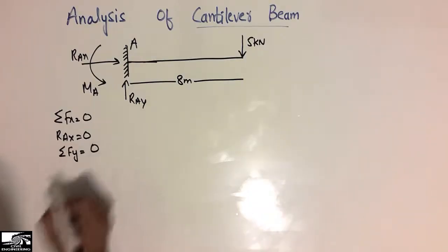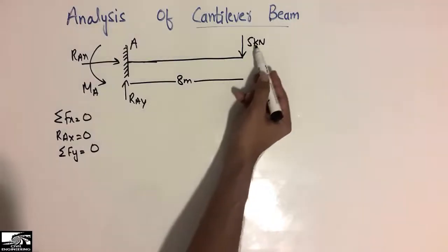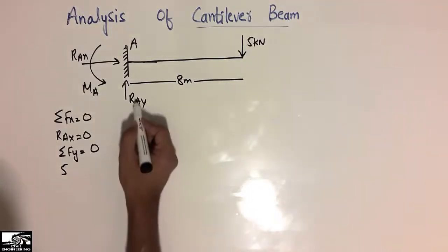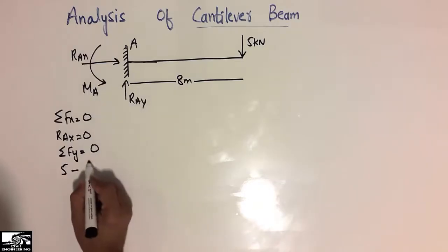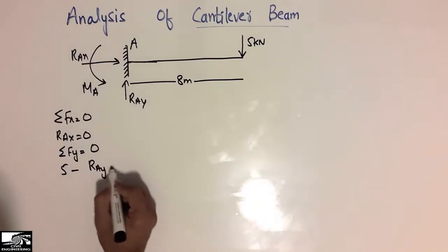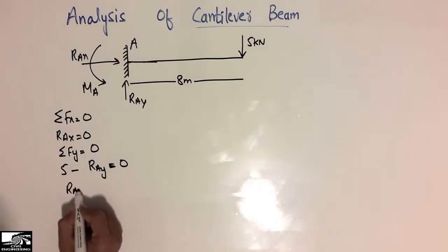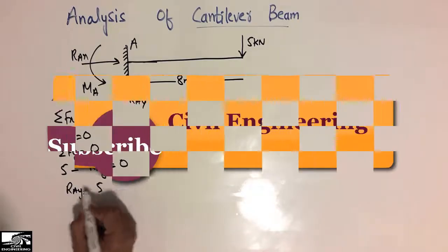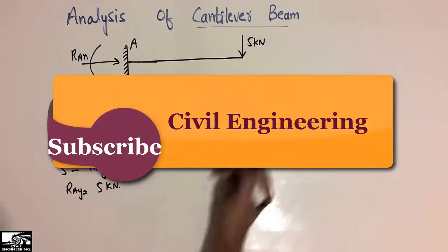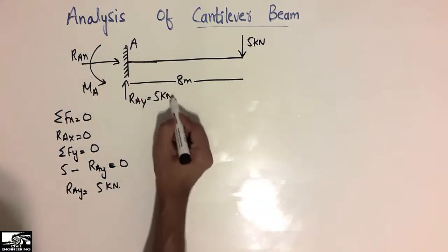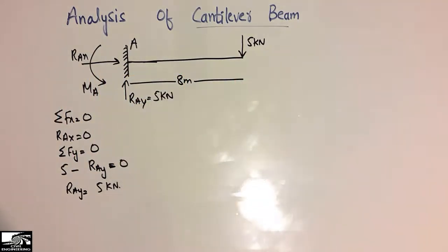Now for the vertical direction, the summation of vertical forces must equal zero. There is a 5 kN load acting downward and the reaction RAY acting upward. Therefore RAY equals 5 kN, meaning the vertical reaction resists the applied load according to the equilibrium of vertical forces.